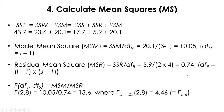Now we have both mean squares, so we take the ratio between the two and get F = 13.6. We can calculate the critical statistics using Jamovi, so let's do that.